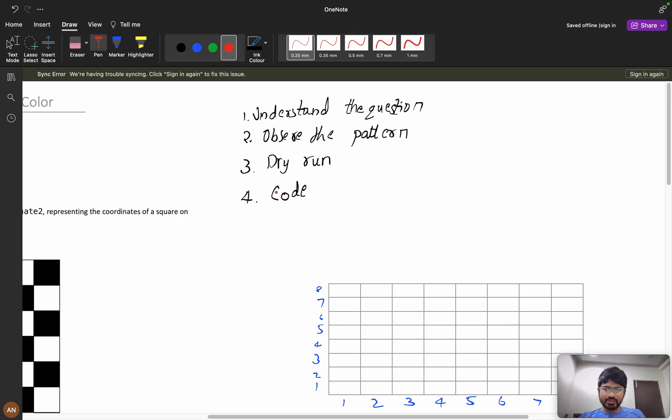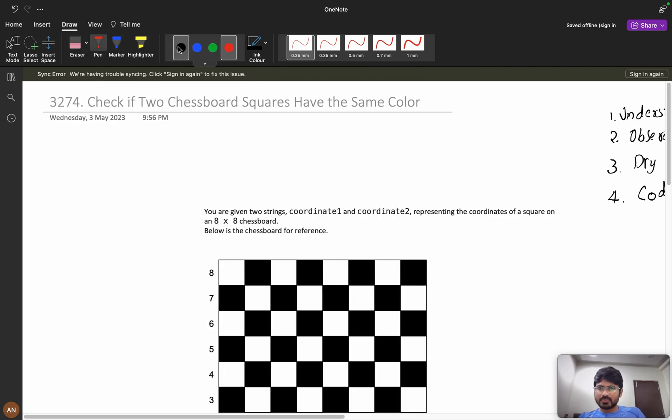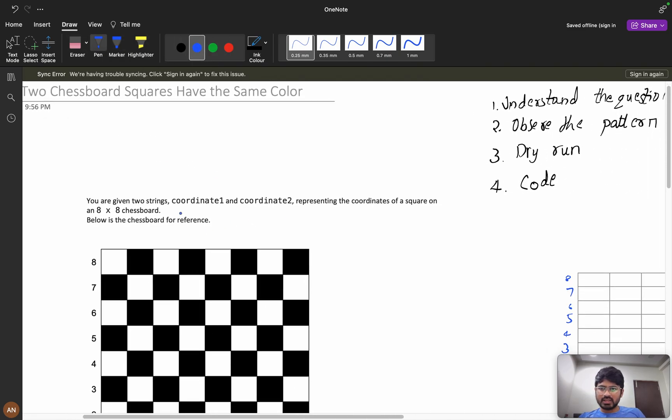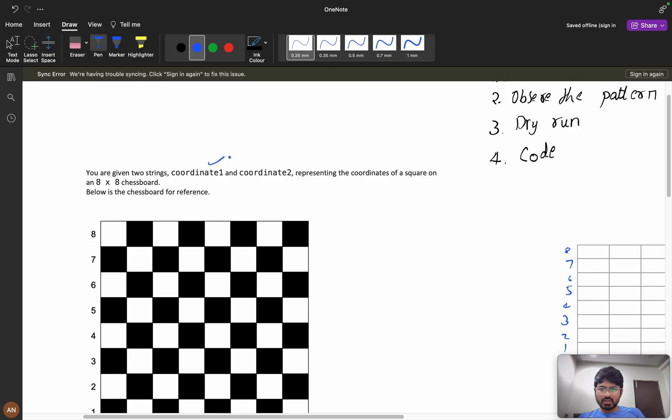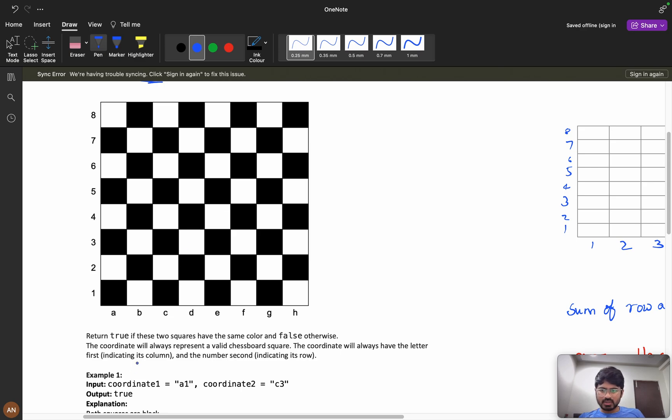Here you are given two strings, coordinate1 and coordinate2, representing the coordinates of a square on an 8x8 chessboard. Below is the chessboard for reference, and he has given the chessboard. We need to return true if these two squares have the same color, or else false. He is saying he will give two coordinates, c1 and c2. If both coordinates contain the same color, then we will return true, or else we will return false.